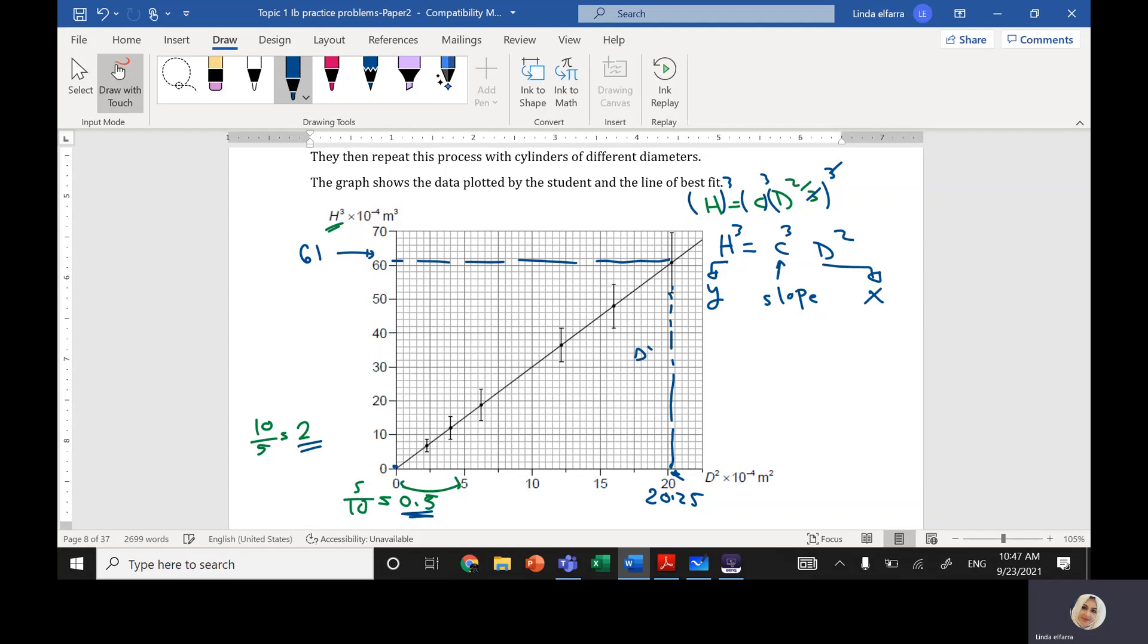So change in y divided by change in x, or rise over run, will give me the slope. The slope, or c cubed, will equal 6.1 minus 0, divided by 2.25 minus 0. If we do this on the calculator, we get c cubed. I need c, so I'm going to take 1 over 3 for both sides.